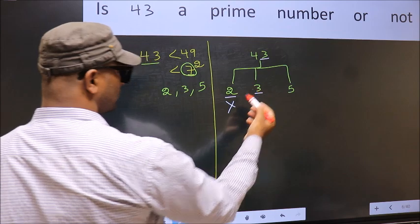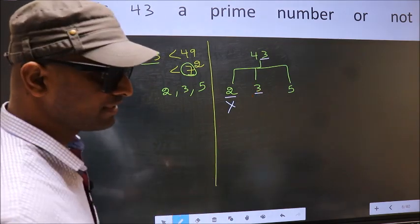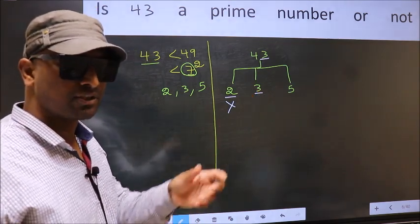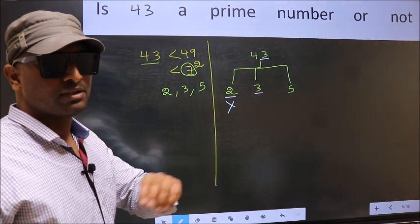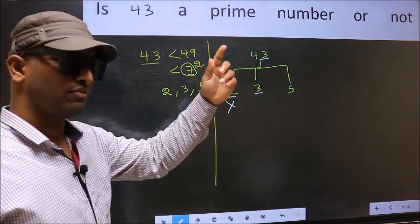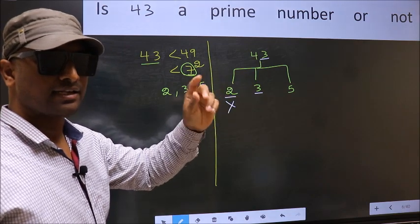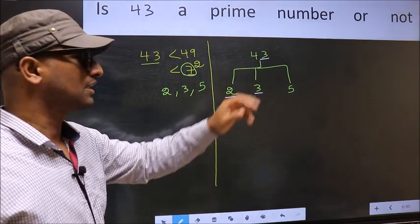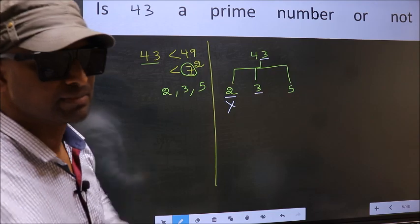Next number 3. To check divisibility by 3, we should add the digits. What I mean is 4 plus 3. We get 7, and 7 is not divisible by 3. So this number is also not divisible by 3.